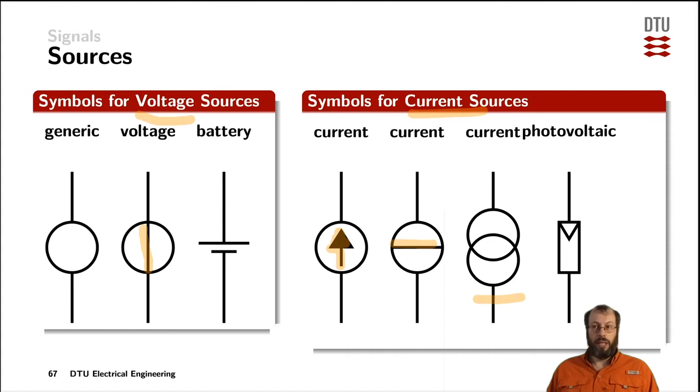And then there are specific examples of voltage sources like a battery, which can be represented by its positive pole and its negative pole. Or a photovoltaic source, which is a current source looking like this.